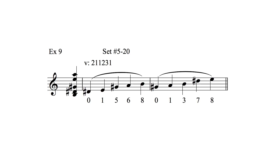Coming back to example 9 — it was a set of five notes: 0, 1, 3, 7, 8. Above example 9 I've marked set number 5-20. What does that mean? It's a five-note set, and it's number 20 in the list — that's all it means. Below that I have V: 2-1-1-2-3-1. V stands for the interval vector. The interval vector is just all the intervals possible within that one set. For example, the first number 2 means two examples of interval class 1 — two minor seconds — from G sharp to A and D sharp to E. One example of interval class 2 means only one major second, and so forth. In other words, the vector tells you the interval content of the set.